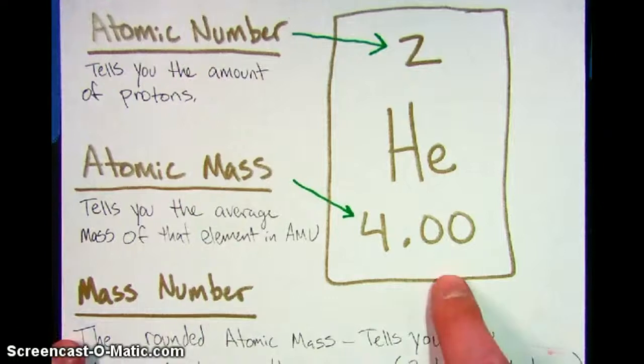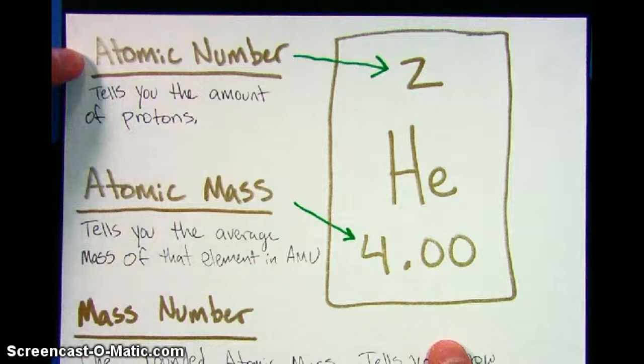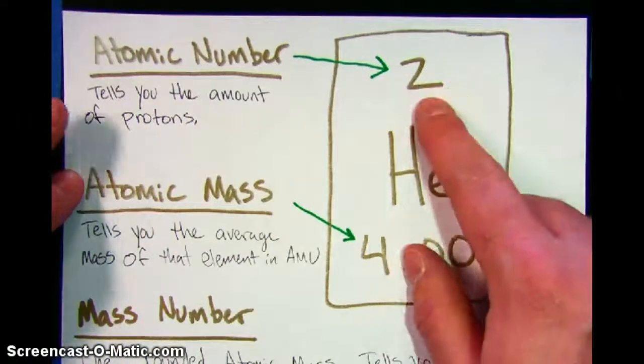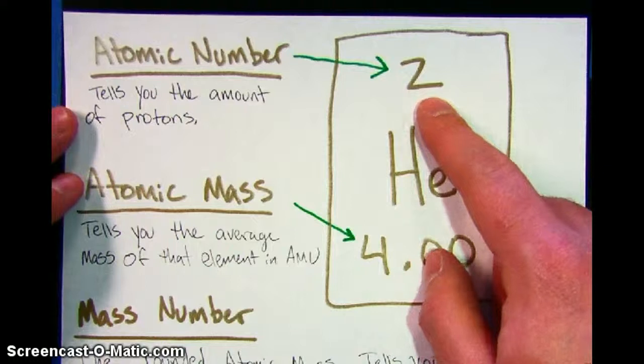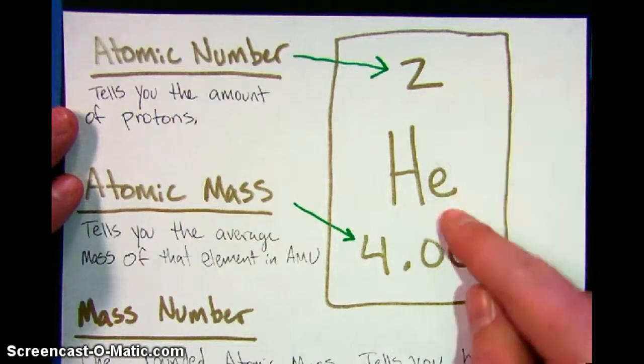This is an example of what helium looks like from a periodic table. The first number is called the atomic number and it tells you the amount of protons. The thing about helium is that every single atom of helium has two protons. It doesn't matter where you find it, the fact that it has two protons is what defines it as helium.